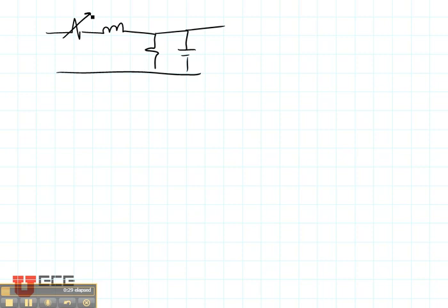In our transmission lines, if you recall, we normally model these as R, L, G, C lines. In a lossless line, that means that our resistance is zero and our conductance is zero, and we are left strictly with an inductor and a capacitor.